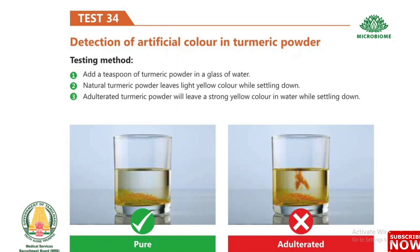Test 34: Detection of artificial color in turmeric powder. Add a teaspoon of turmeric powder in a glass of water. Natural turmeric powder leaves a light yellow color while settling down. Adulterated turmeric powder will leave a strong yellow color in the water while settling down.